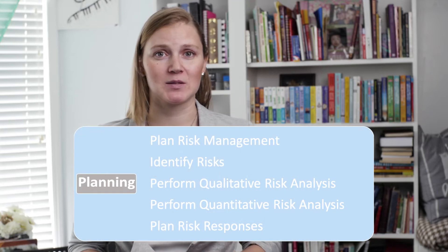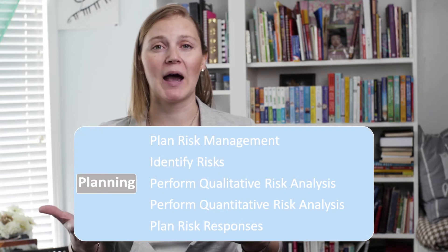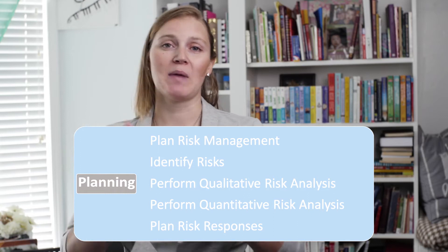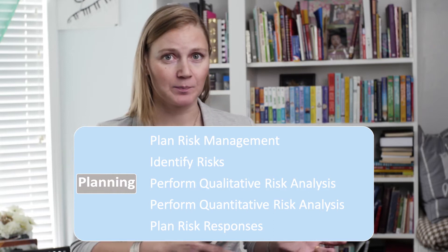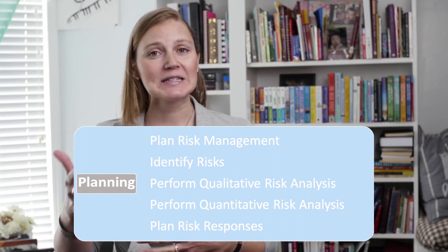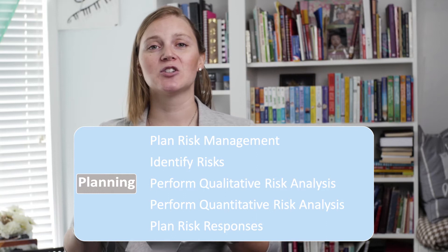The first process is plan risk management. The output is the risk management plan. There are no risks identified here — we're just determining how we will go about our risk management for the project.